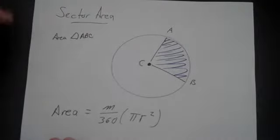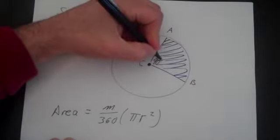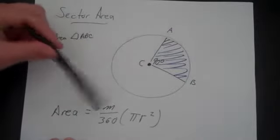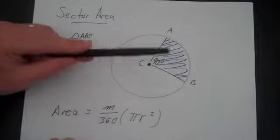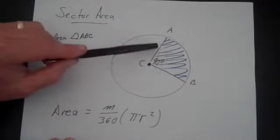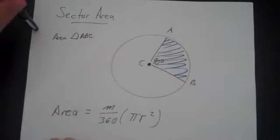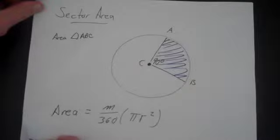And it kind of makes sense. If this was 90 degrees, 90 divided by 360 is one-fourth. The area of this sector will be one-fourth of the circle because this angle is one-fourth of the whole circle.